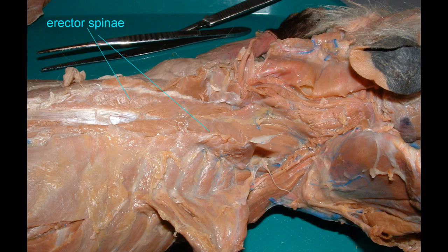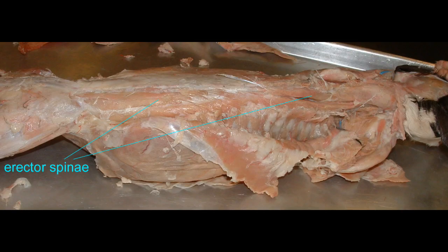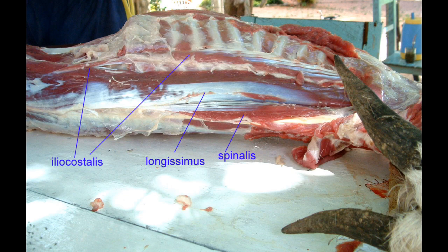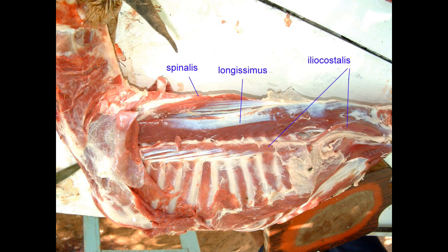Although mammals, like this opossum, would further reduce the importance of lateral flexion of the back in locomotion, they still retain the epaxial musculature, which forms the erector spinae muscle. You can also observe this in this cat — both the erector spinae and its subdivisions, the iliocostalis, longissimus, and spinalis divisions.